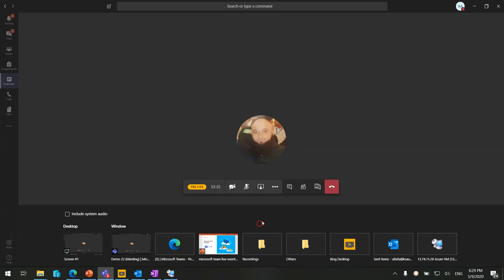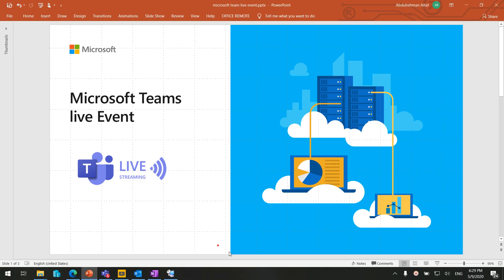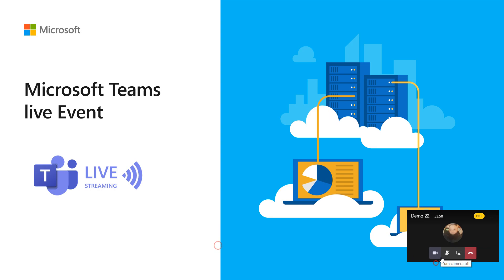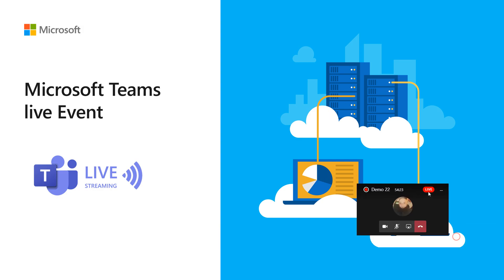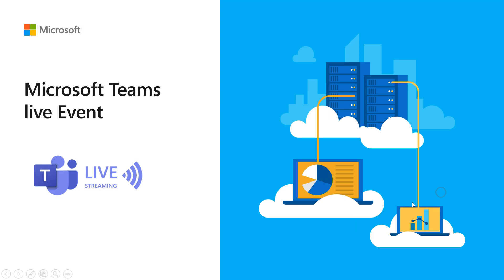Let me start an event and give you an idea of how live events look. I'm going to turn on my camera and share my PowerPoint presentation. Here I am — on the other side, the presenter is sharing my video and webcam to all the attendees. The organizer has started the event. You can now see the 'Live' indicator, which means the event is live and all attendees are able to watch the session.